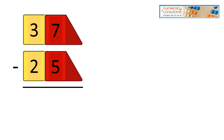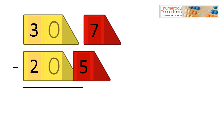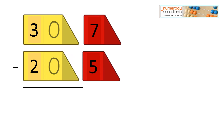37 minus 25. Again, we'll break off our ones. What we have is 7 minus 5 — a problem we can do — and 30 minus 20, also a problem we can do. 30 minus 20 equals 10, and 7 minus 5 equals 2. Our answer is 12.